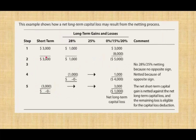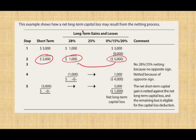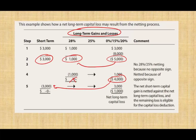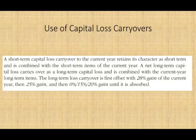In a third scenario — gain, gain, and loss — you have a gain in the 28% group, a gain in the non-collectible group, and a short-term loss of $5,000. First, use $1,000 of the $5,000 loss to bring the 28% group down to zero; the remaining $4,000 offsets the short-term capital gain of $3,000, eliminating it entirely. What you're left with is a $1,000 net long-term capital loss.